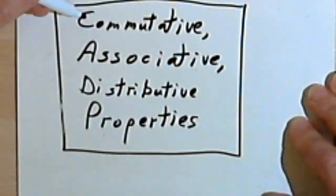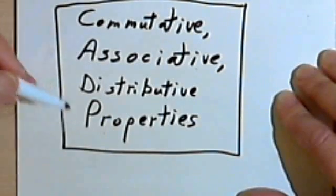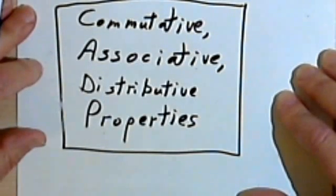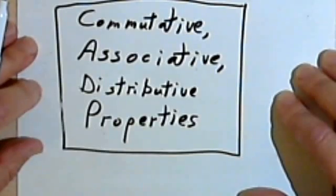This video is going to be about the commutative, associative, and distributive properties. Basically these things are common sense and you probably know them already. Probably the only hard part is remembering the names for them.